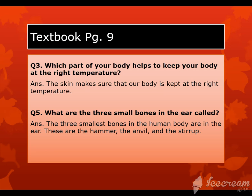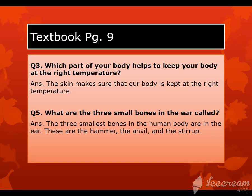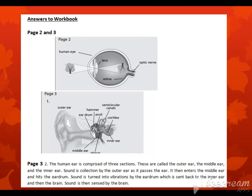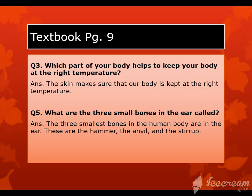Next question is question number five of textbook page nine: what are the three small bones in the ear called? We studied there are three smallest bones present in the human ear and their names are hammer, anvil and stirrup. You will write: the three smallest bones in the human body are in the ear — these are the hammer, the anvil and the stirrup. You have to write these three question answers on your copies and learn these answers.